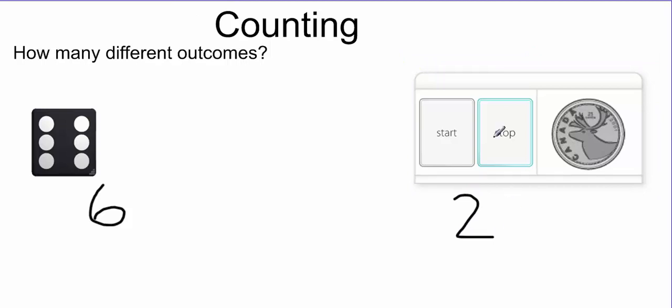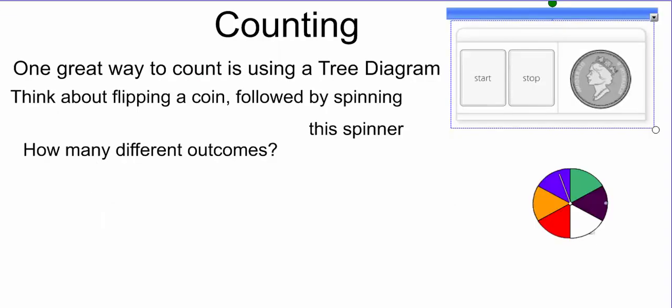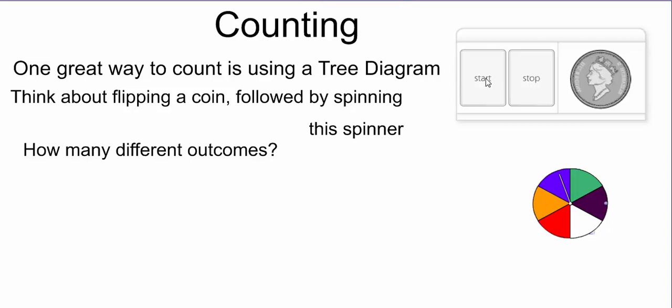Not very difficult to count the number of ways that a die could land, or the number of outcomes for a coin. Things start getting a little more confusing, however, when the things that we are doing become a little more complex. For example, let's pretend that at once we are going to flip a coin and spin a spinner both at the same time, and I could ask you how many different outcomes are there now.